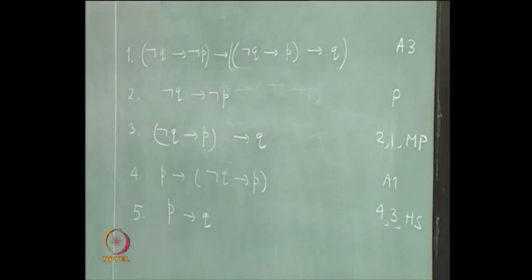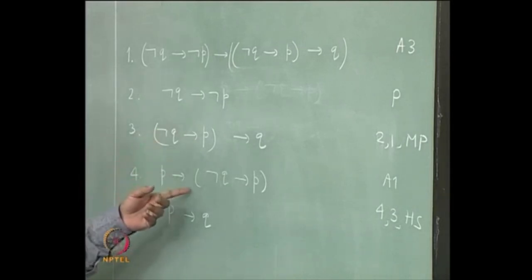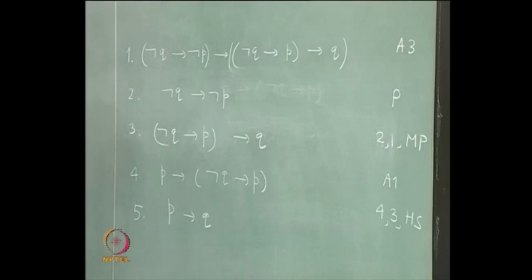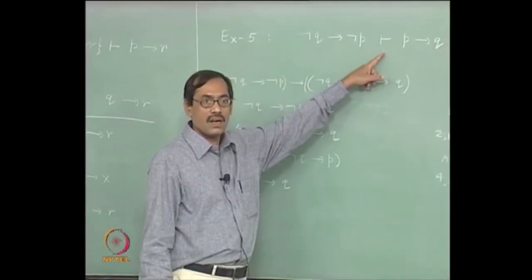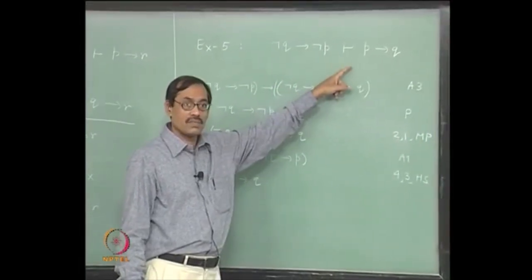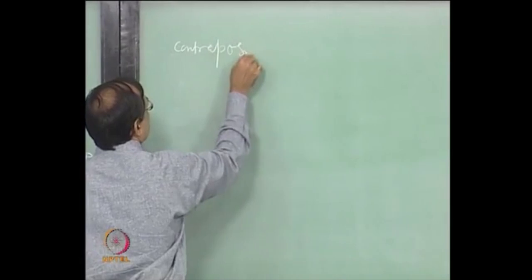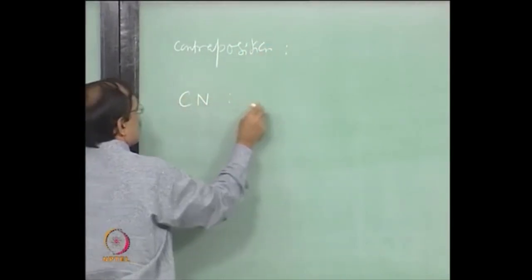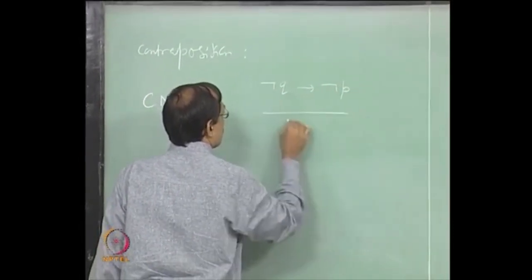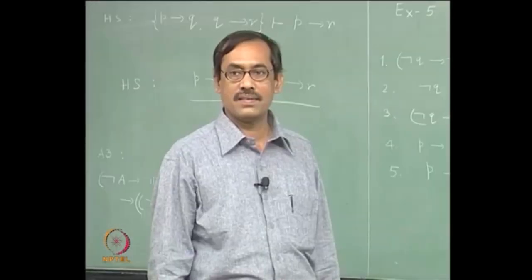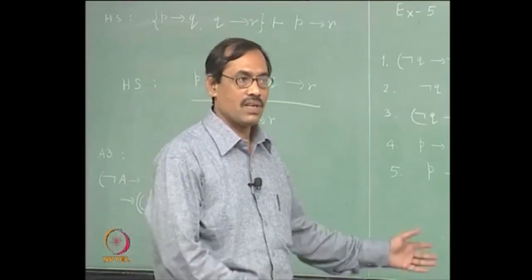If you want a proof without using HS, all you have to do is insert a proof of HS here, starting from this and then go on using this, finally concluding this. Once you get that this consequence is provable, you can state another inference rule from it. Let us write this as contraposition (CN): not q implies not p, therefore p implies q. Later you can use this as a rule as well.